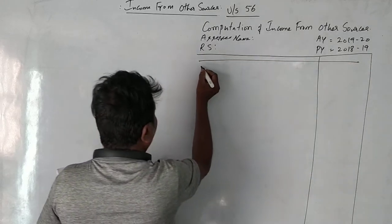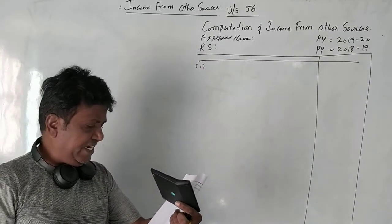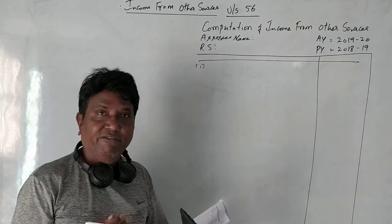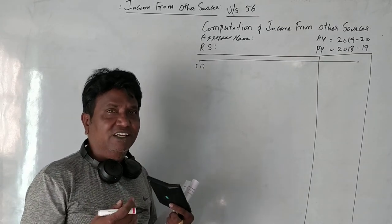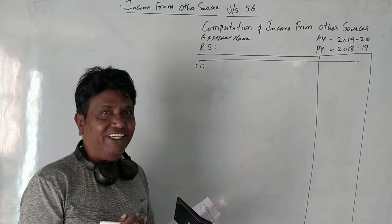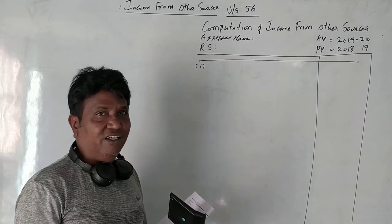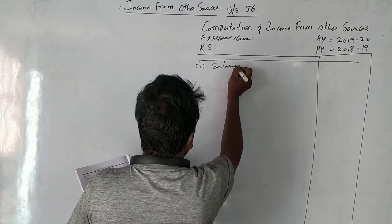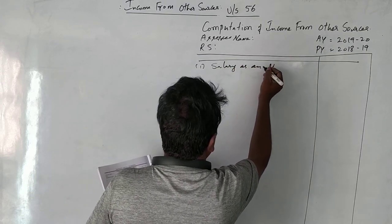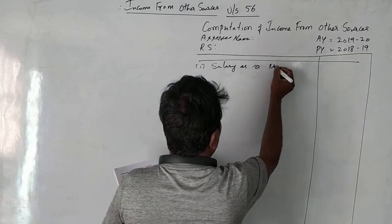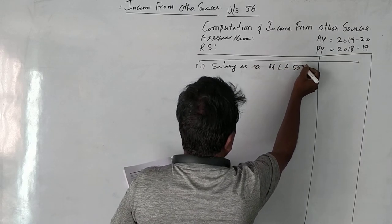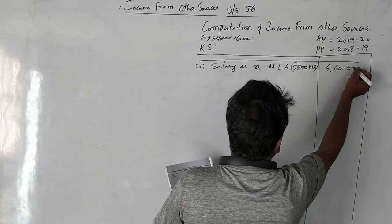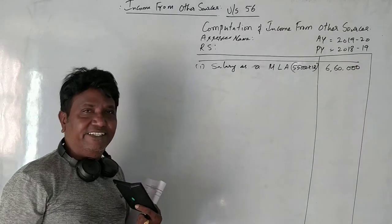First point: salary from government of Karnataka received as a member of the legislative assembly. Since an MLA is a representative of the public or citizens, there is no employer-employee relationship, so it is taxable under the head income from other sources. Salary as MLA: 55,000 per month for 12 months equals 6,60,000.